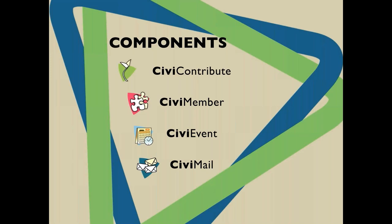Civi Member creates a contribution record via Civi Contribute, and so does Civi Events for event registration. The Civi Mail component is used to send out email blasts to people within your database. There are many more components — ones to help with HR, Civi Volunteer for volunteer organizations, and Civi Case for tracking support tickets. Aside from components, there are extensions that extend functionality further. For Civi Mail, there's an extension called Mosaico that gives you a drag-and-drop email builder interface, which is pretty cool.